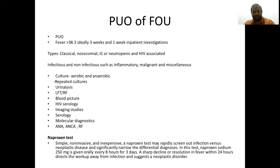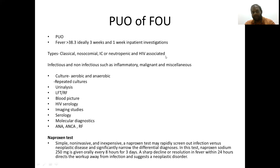We categorize PUO as classical PUO, nosocomial PUO, intensive care-associated, immunocompromised or neutropenic, and HIV-associated. So there are four types. We can also perceive it as infectious or non-infectious. Non-infectious causes include inflammatory conditions, malignant causes, or miscellaneous. How do we investigate? We have done several investigations already, but now we have to go further, dig deeper into the history, and continue daily clinical assessment — this is very important.